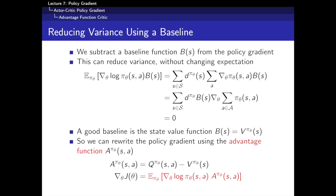If we just expand this out, our expectation over states is multiplied by the gradient of our policy multiplied by the baseline. We can pull the baseline outside of this sum because it doesn't depend on the action, and we can pull the gradient outside as well. Then we know that our policy sums to one — it's a probability distribution — so we have the gradient of one. The gradient of a constant is always zero, so this whole term is actually zero in expectation. It's completely legitimate to add or subtract any term of this form.